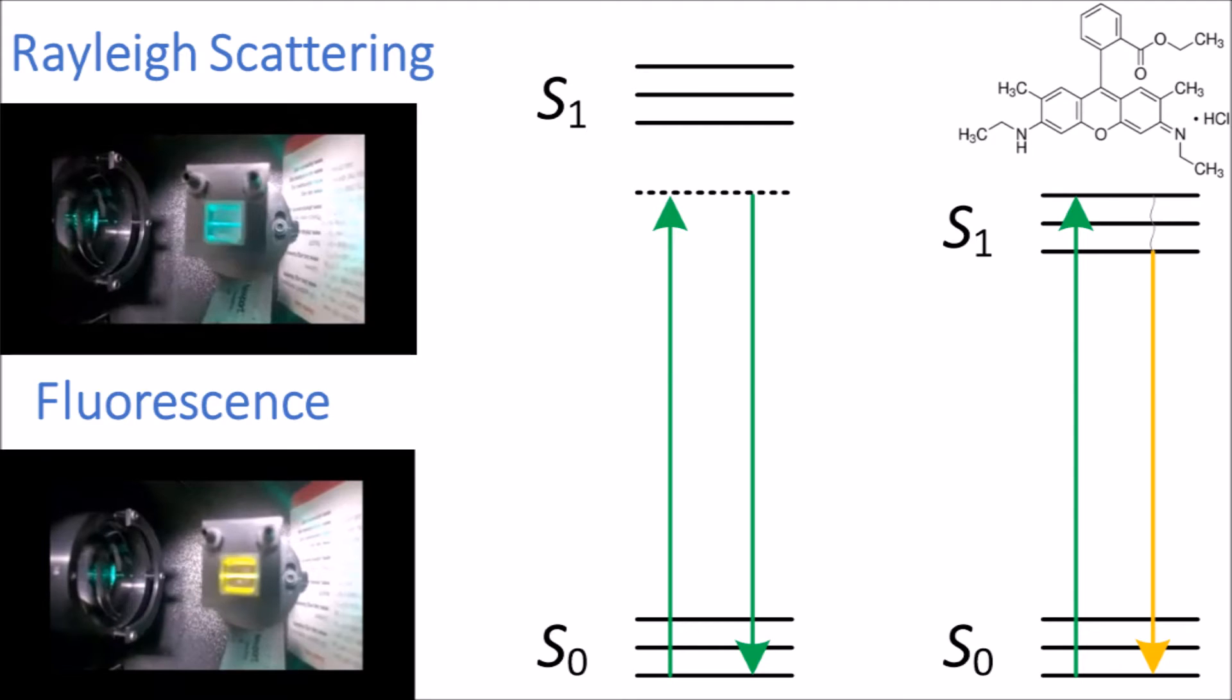With Rayleigh scattering, all that happens is the light bounces off the sample. The bigger the object in the sample is and the more of it, the more intense Rayleigh scattering will be. Rayleigh scattering occurs in about a femtosecond, so this process can be thought of as almost instantaneous.